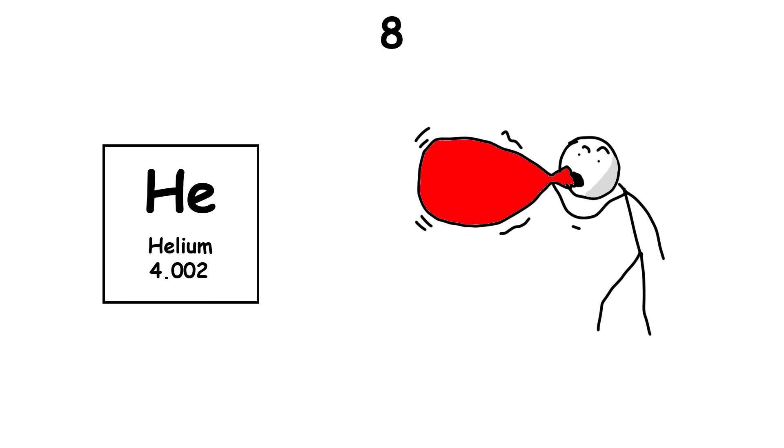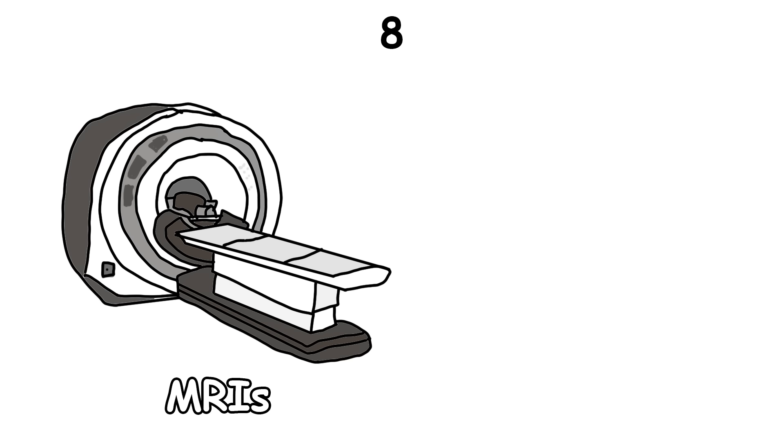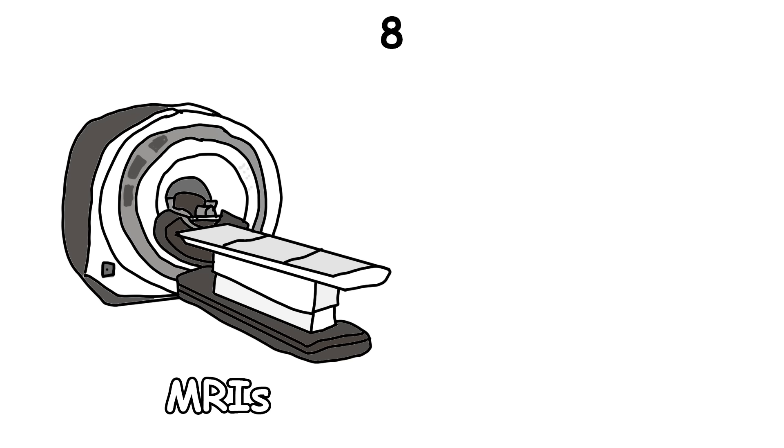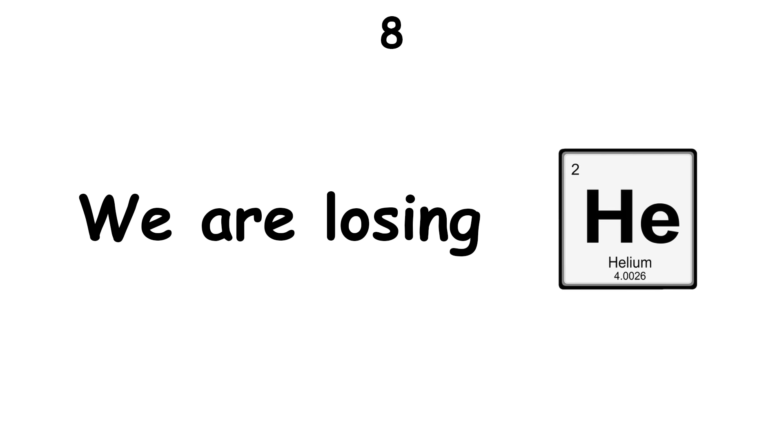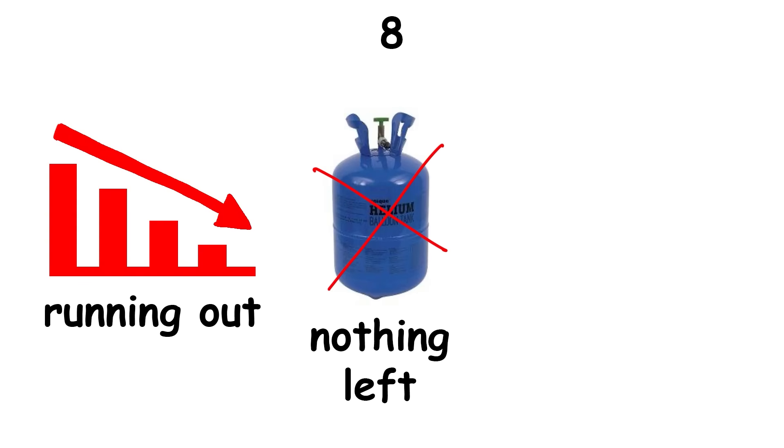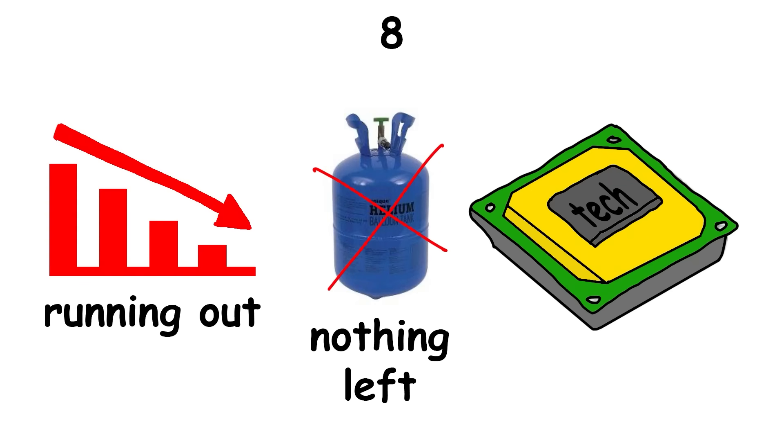Helium, the thing we put in balloons and inhale to get a squeaky voice, is also used in important technologies like MRIs. But it's so light that Earth's gravity cannot contain it, so we're losing it as time passes. It's running out, and when we won't have any left, many technologies will stop working.